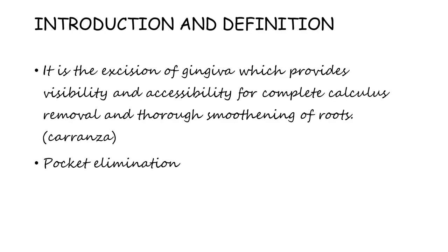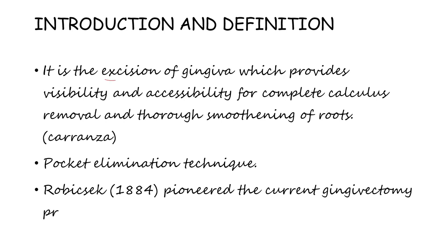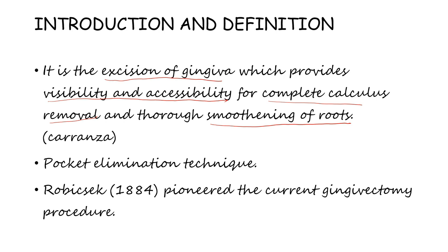Let's first begin with the introduction and definition. This definition we can split into three parts: excision of gingiva, visibility and accessibility, and complete calculus removal and thorough smoothening of the roots. Visibility and accessibility and smoothening of the roots becomes the rationale of gingivectomy. The complete definition is: excision of gingiva which provides visibility and accessibility for complete calculus removal and thorough smoothening of roots. This definition is taken from Carranza. It's a pocket elimination technique — as opposed to pocket reduction — so it comes under the pocket elimination technique.